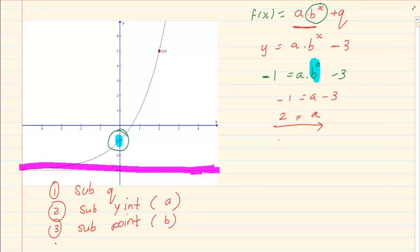Now once you have solved for A, y is equal to 2 times B to the power of x minus 3. You still haven't solved for B. Then you would substitute your point. So I have y is equal to 5 which is equal to 2 times B, x is equal to 2 minus 3.